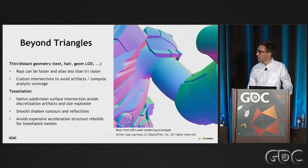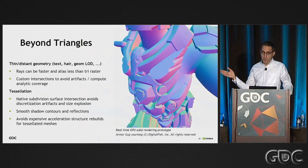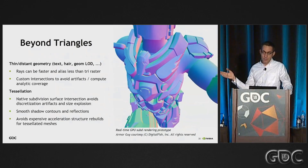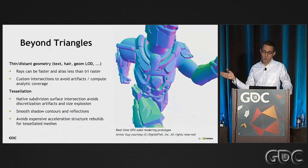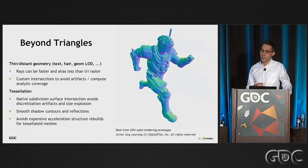The benefits are that you get perfect normals and there are no artifacts from tessellation anymore, since you don't work with the triangle mesh in this case.